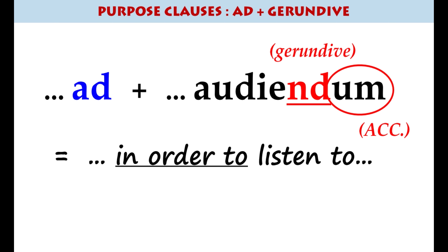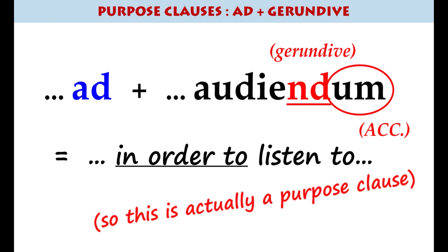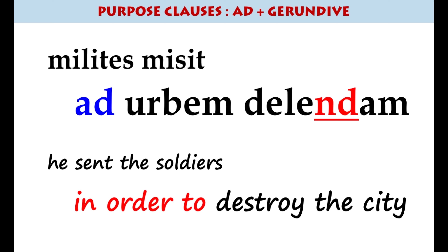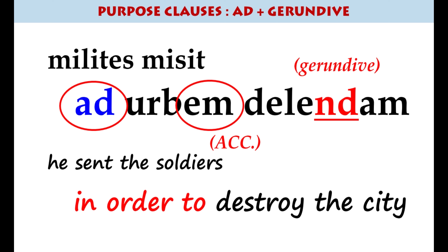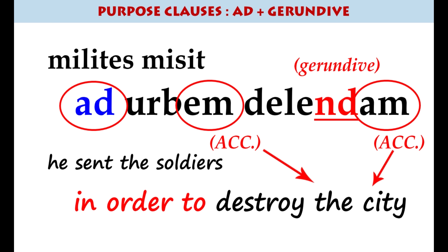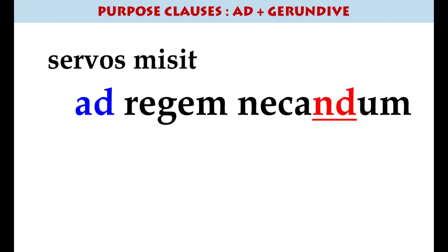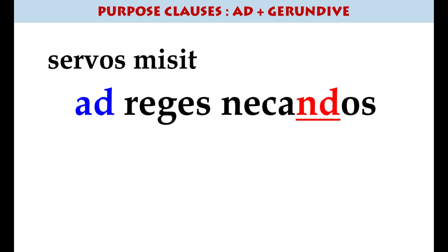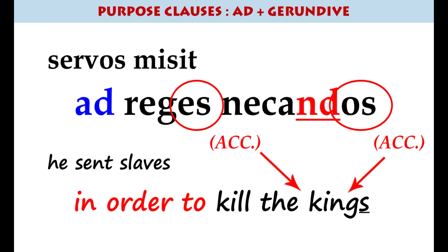'Ad' takes the accusative as a preposition, and here we see the form in a sentence. You'd need to translate it as 'he sent the soldiers in order to destroy the city'. There are other ways to say 'in order to destroy', as covered in other videos, but you will encounter this form in your GCSE. 'Ad urbem delendam' — accusative. He sent slaves to kill the king, or in the plural, to kill the kings — that's the accusative plural.